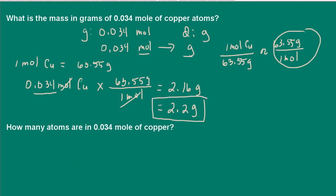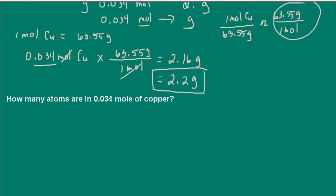In this next question we're asked: how many atoms are in 0.034 moles of copper? We're given the number of moles but asked for atoms, so we're going to need to use Avogadro's number. We know that one mole of anything is equal to 6.02 times 10 to the 23. It's like using a dozen — one dozen of anything equals 12. One dozen eggs is 12 eggs, one dozen atoms is 12 atoms.